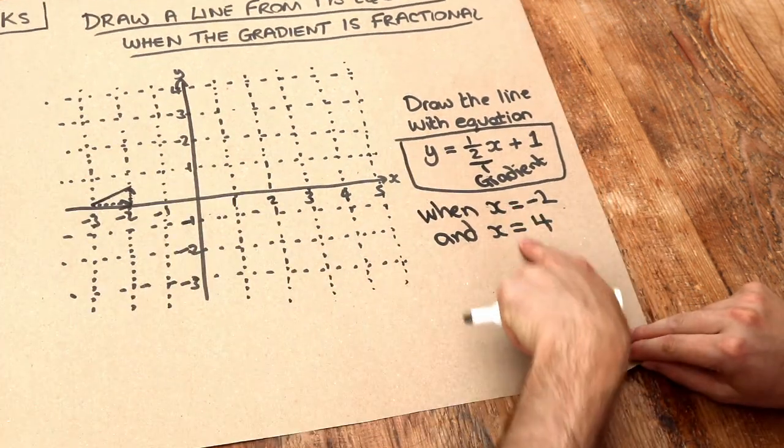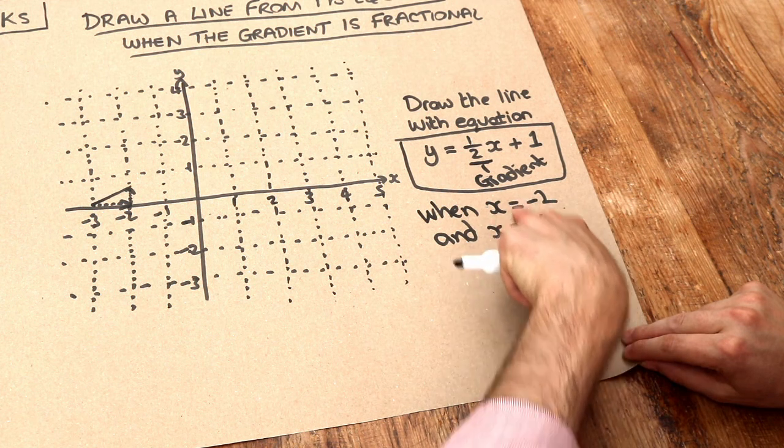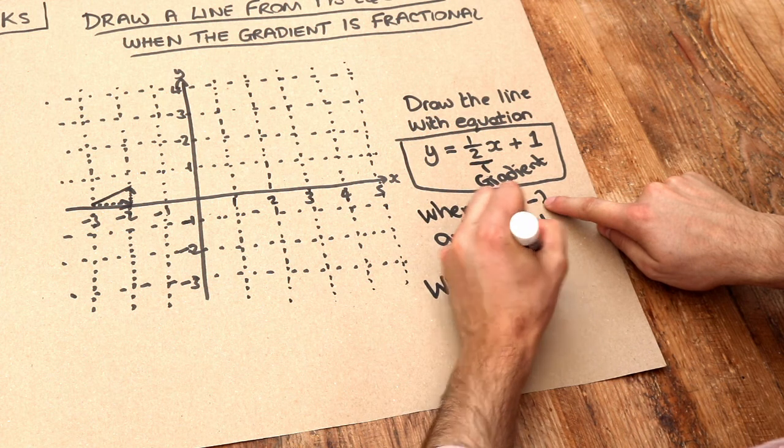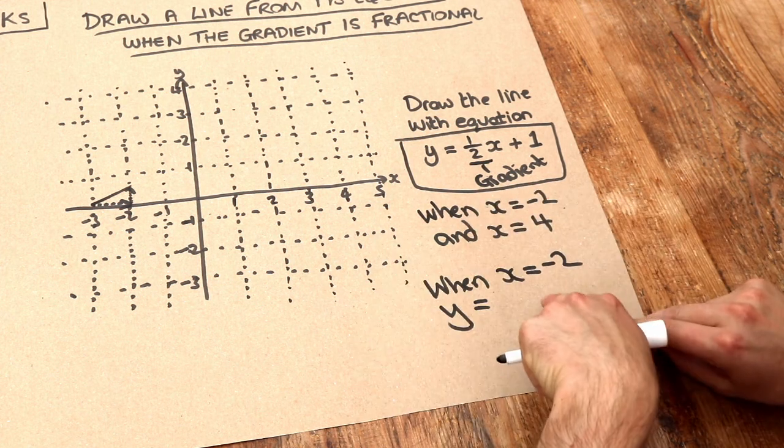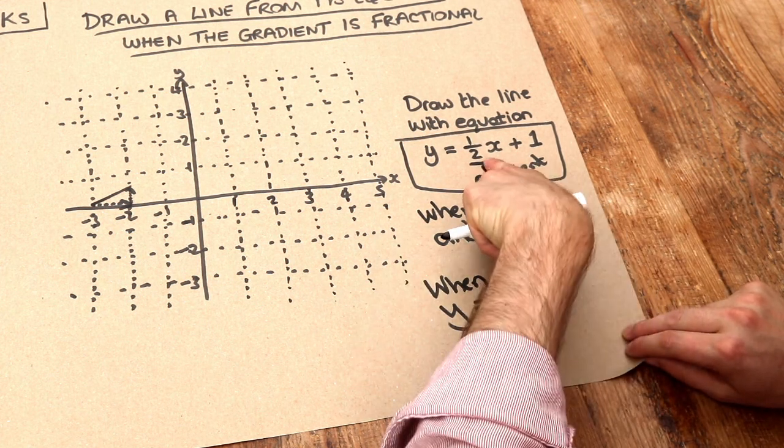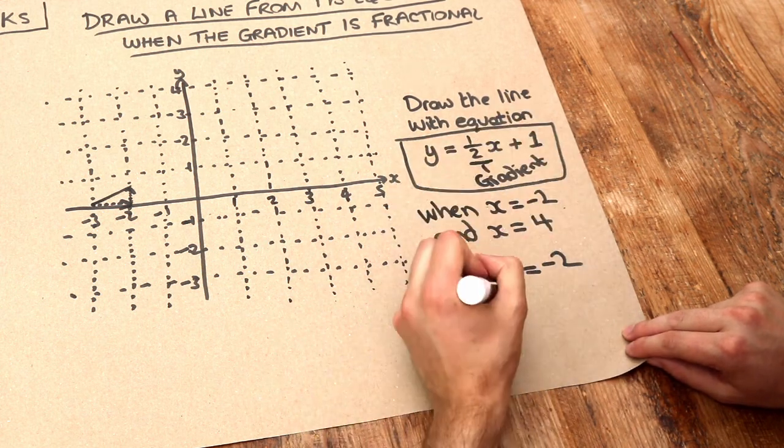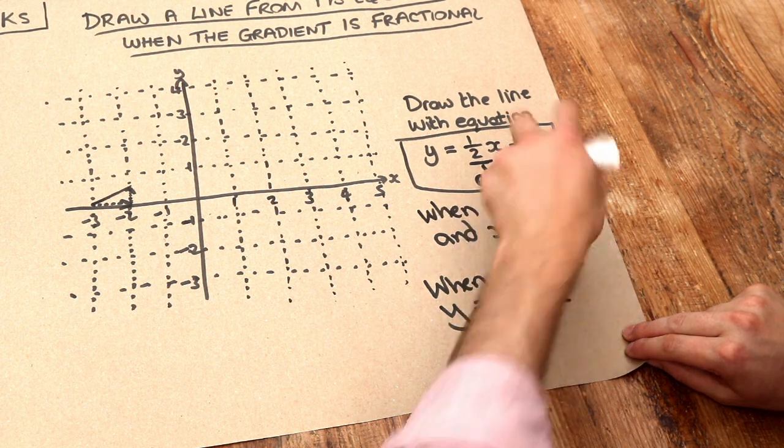Let's use these two extreme values of the line. When x is minus 2, the left end of the line, what will y be? We just need to substitute this minus 2 into the equation. Y is equal to half times minus 2, so half times minus 2 plus 1.